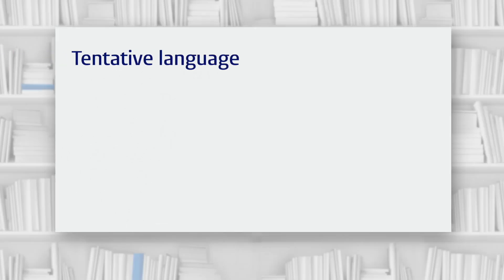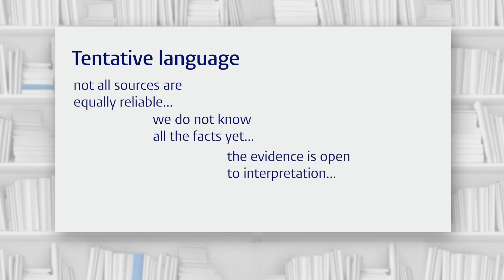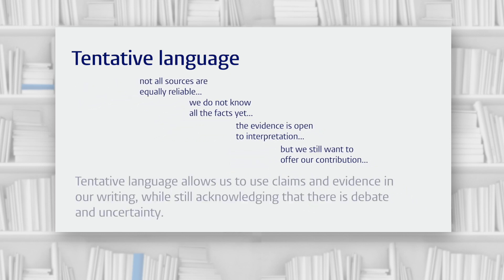So why do we need to use cautious or tentative language? Well, you already know that not all sources are equally reliable, and you also know that academic research is an ongoing discussion — we don't claim to know all of the facts yet. That ongoing discussion also involves debates, because most evidence is open to interpretation. However, even with all this uncertainty we still want to use the sources and build on them to offer our own contribution. Therefore we use cautious or tentative language to present our sources and evidence, because tentative language allows us to use claims and evidence in our writing while still acknowledging all the debate and uncertainty that's out there.